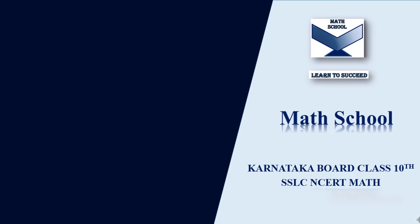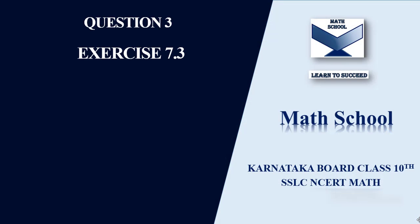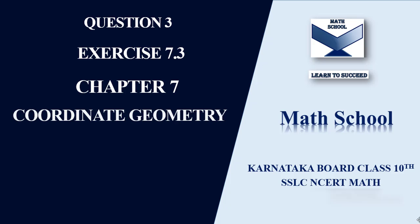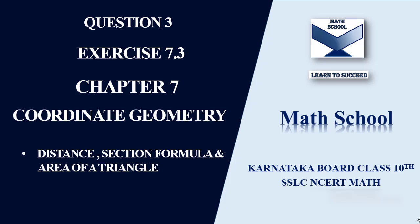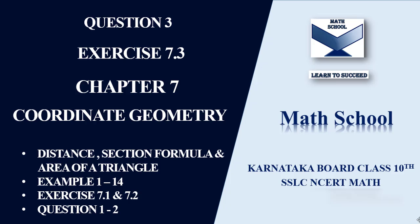Welcome back to my channel Math School. In today's video let us solve question number three from exercise 7.3, chapter 7 coordinate geometry. In my previous videos I've completed the distance formula, section formula, and area of the triangle formula, examples 1 to 14, exercises 7.1 and 7.2, questions 1 to 2. If you have not watched these videos, find the link in the description box below or click the i button above.